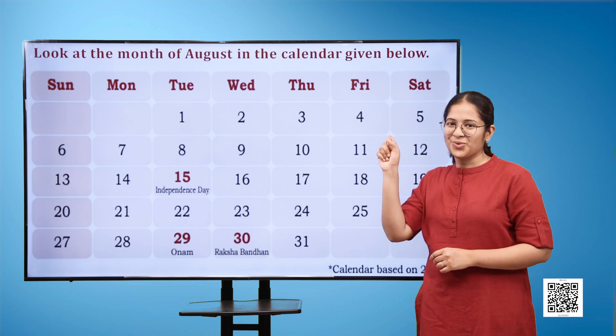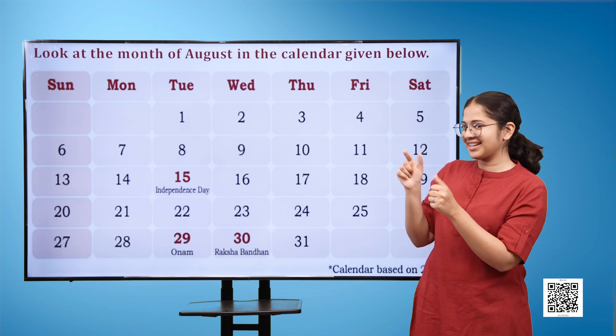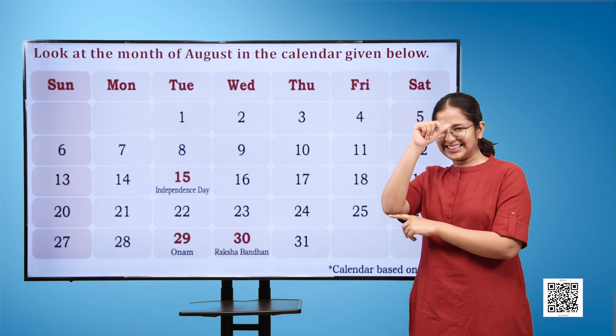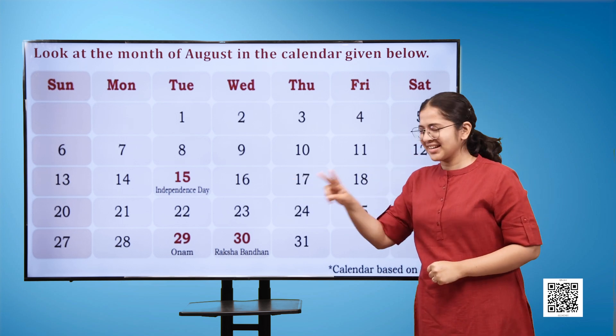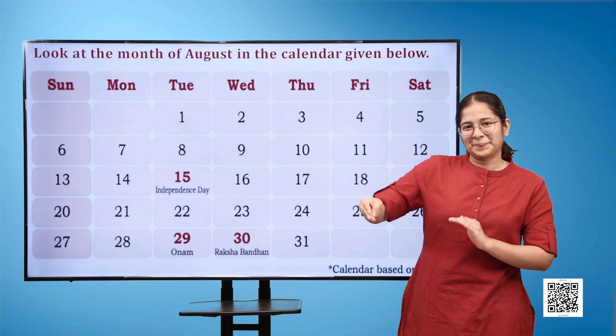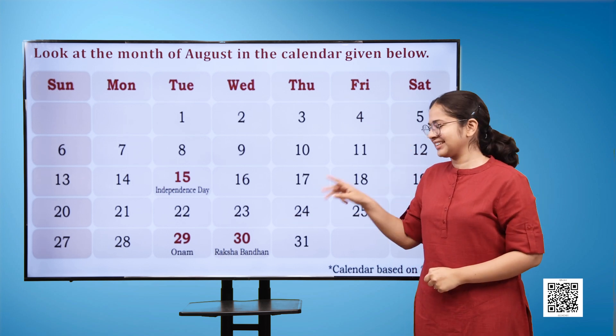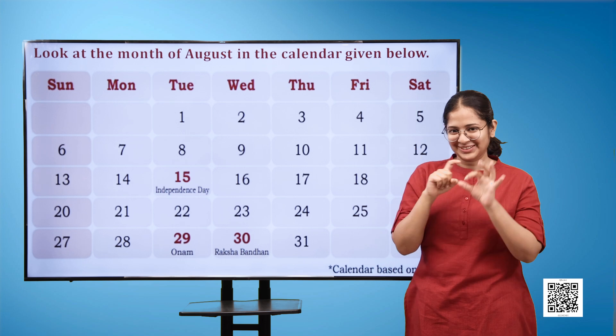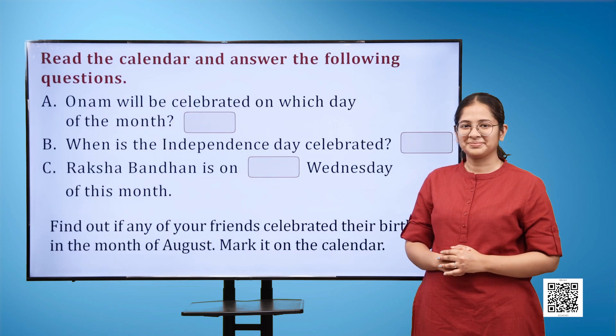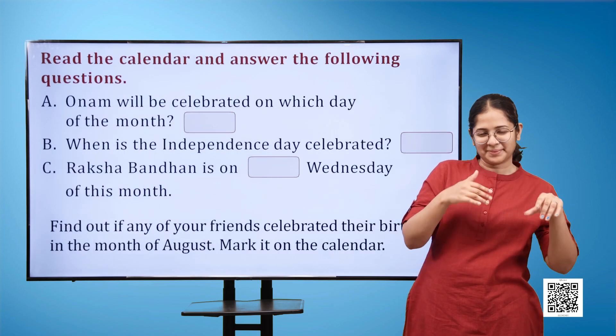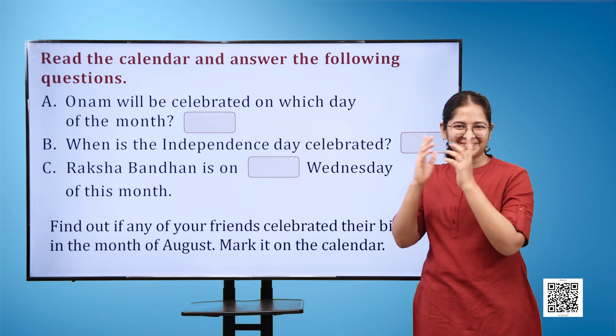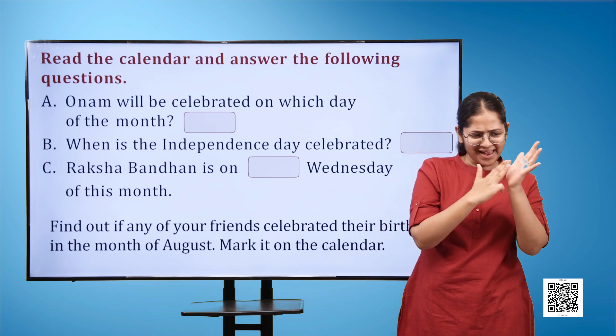Look at the month of August in the calendar given here. 15th August is again on Tuesday and Onam, which is on 29th of August, again falls on Tuesday, whereas Raksha Bandhan, which is on 30th of August, falls on a Wednesday.